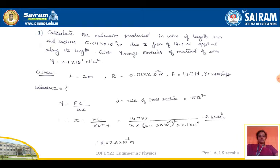Force is given as 14.7, length is 2 meters, π is a constant, R = 0.013 × 10⁻² (whole squared), and Y = 2.1 × 10¹¹. Substituting all these values, we get X = 2.6 × 10⁻³ meters. This is the extension produced in the wire.